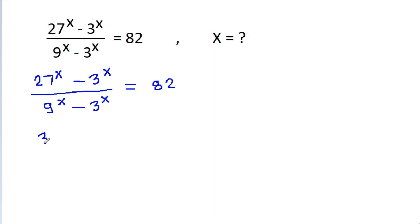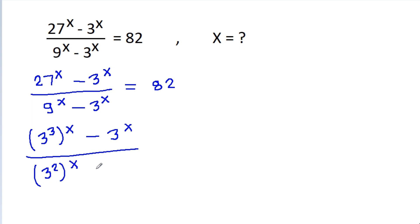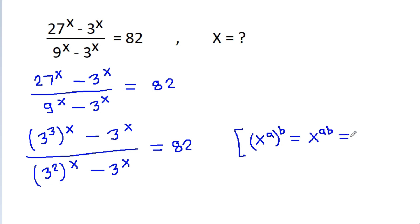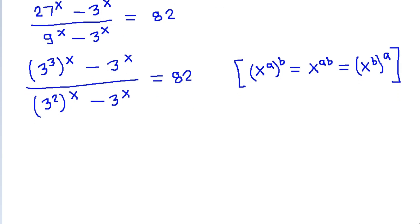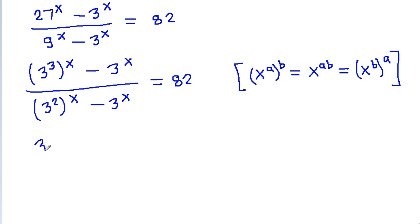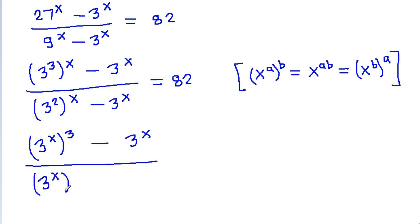We rewrite: 27 is 3^3, so 27^x becomes (3^3)^x, and 9 is 3^2, so 9^x becomes (3^2)^x. Using the rule x^(a^b) = x^(ab), we get (3^x)^3 minus 3^x in the numerator, and (3^x)^2 minus 3^x in the denominator, all equal to 82.